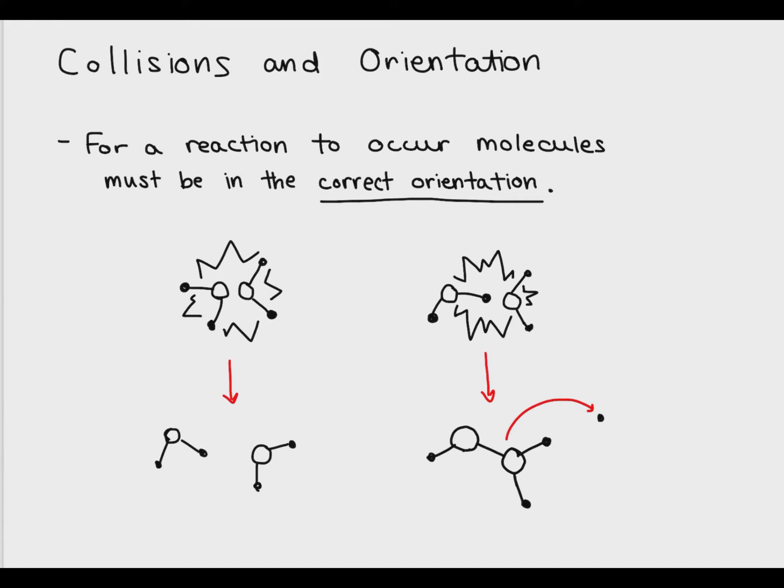The correct orientation means that the atoms must be physically lined up correctly in order to react. For example, I've got some molecules drawn below which show that the reaction only occurs when the black atom on one molecule interacts with the white atom on the other. If they happen to collide with both of the white molecules hitting each other, then no reaction will occur.